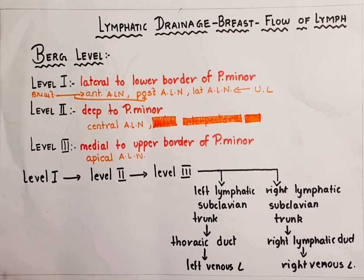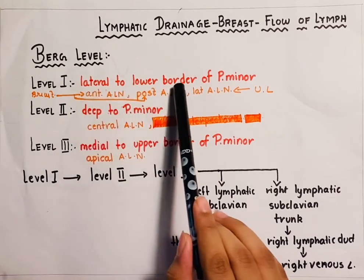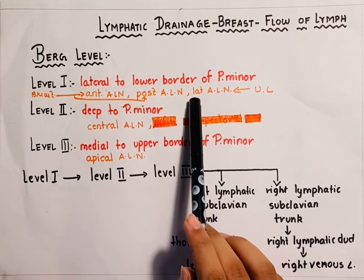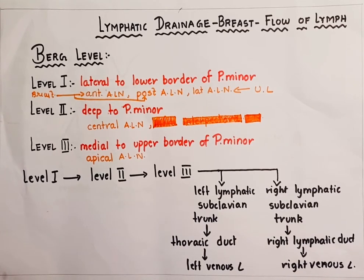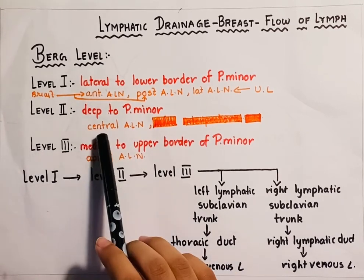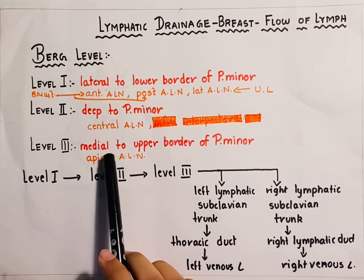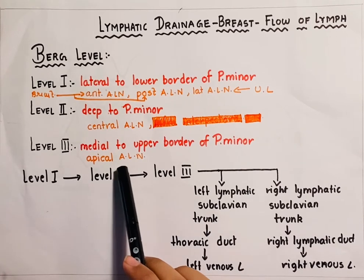The axillary lymph nodes have been categorized into three levels by Berg's axillary lymph node categorization. The level 1 group of lymph nodes lie lateral to the lower border of the pectoralis minor muscle and include the anterior, posterior and lateral group of axillary lymph nodes. The level 2 group lie deep to the pectoralis minor muscle and include the central group of axillary lymph nodes. The level 3 group lie medial to the upper border of the pectoralis minor muscle and include the apical group of axillary lymph nodes.